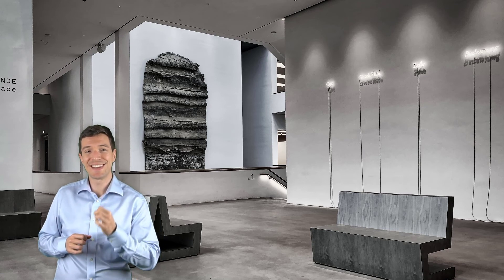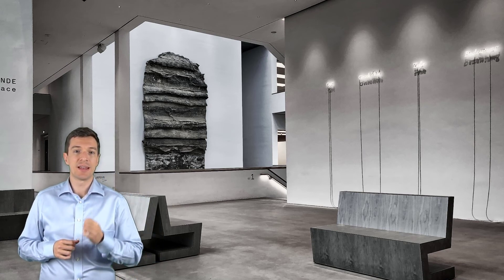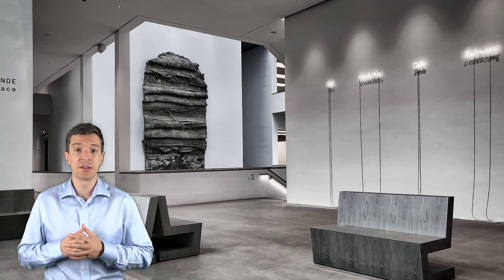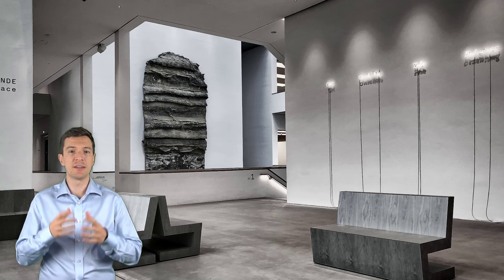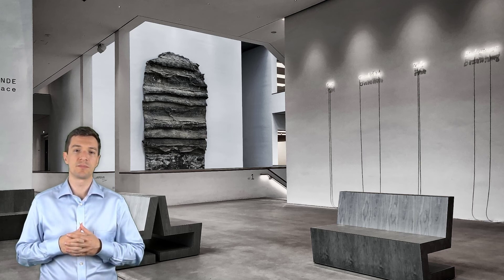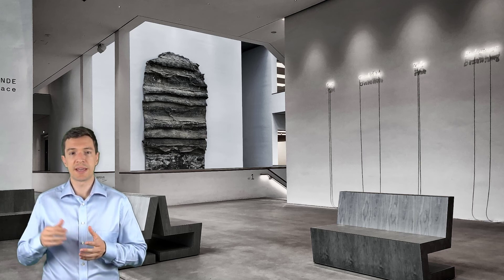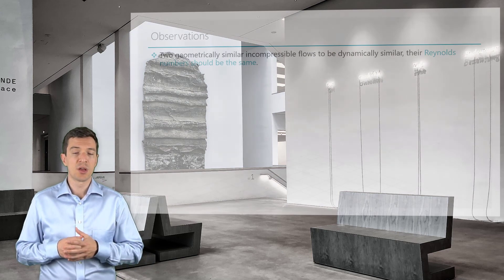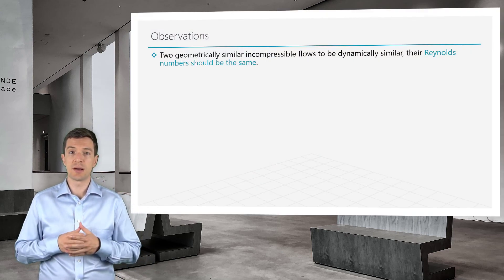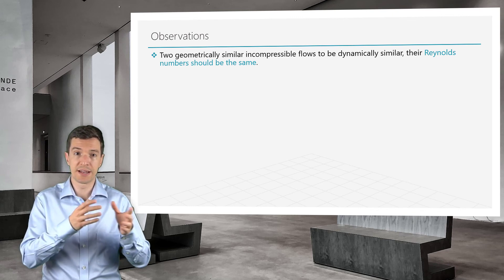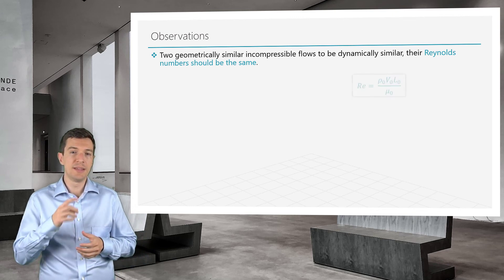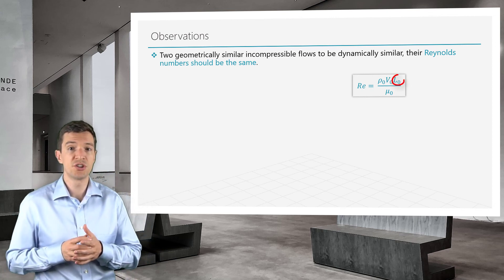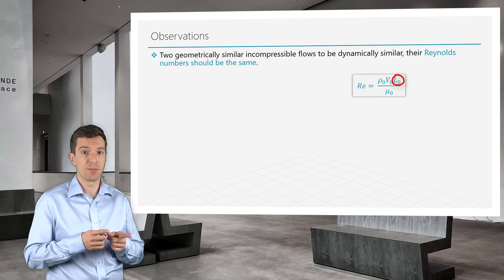Now, let's see an example for this. Let's take a model and a full-scale object that we want to examine in an experimental facility. In order to replicate the full scale conditions on the scale model, we need to match the Reynolds number for the full scale case. This means that we have to counterbalance the change in characteristic length of the body, modifying either density, viscosity, or velocity.